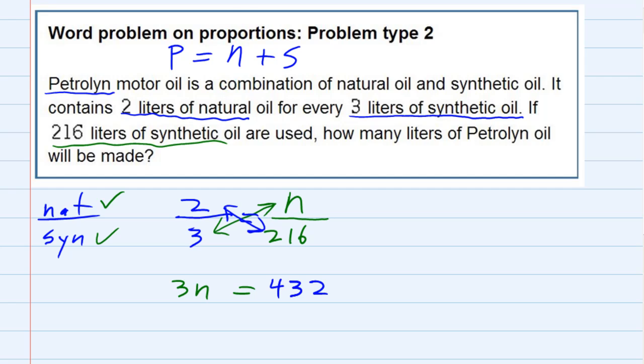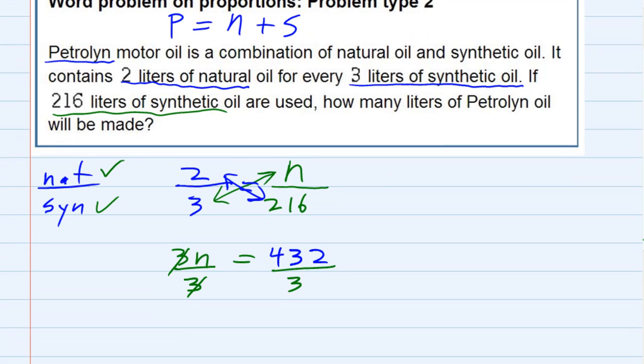So to solve this for n we just need to divide the 3 over on both sides. And we have n on the left hand side equals, now we've got a little division here to do, so let me just step over to the side. 3 goes into 432, one time gives me 13, that would be 4 times, that's 12. And one more time, 4 would be another 12. So 144. So we've got 144.